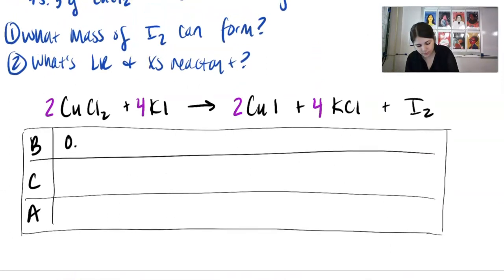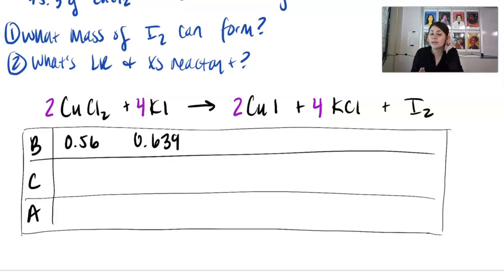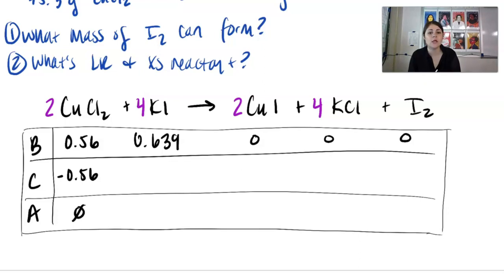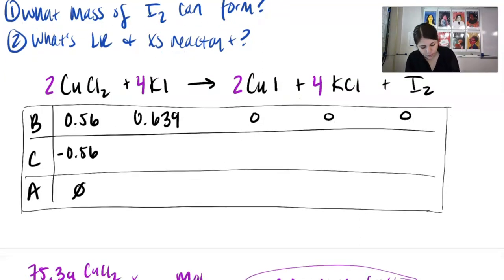In the before row: 0.56 moles of copper(II) chloride and 0.639 moles of KI. We should have no products, so put 0, 0, 0. Now it comes down to determining the limiting reactant — it doesn't matter which you choose first; you'll figure it out. If you get a negative in the after row, it is not your limiting reactant. I'm going to work with copper(II) chloride and say all of it will be used up. We need to figure out how much KI was used based on 0.56 moles of copper(II) chloride.